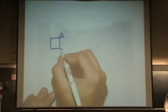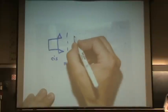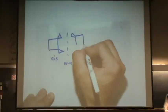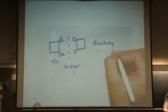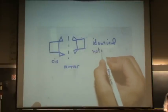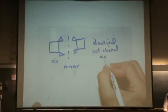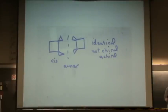Let's draw the cis one first. Here's cis. Here's the mirror. Here's the mirror. Here's the mirror image. Are those the same or different? These are identical. Is this chiral? It's not chiral or what we call achiral, just like amoral. It's not chiral. This will not rotate plane polarized light even though it has two chiral carbons.